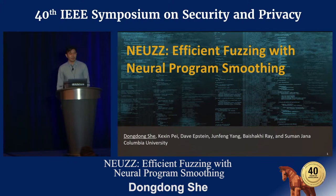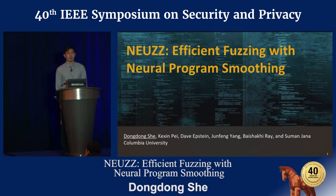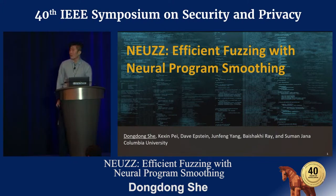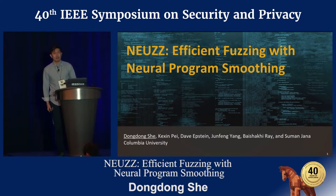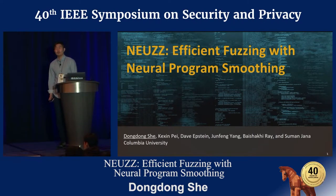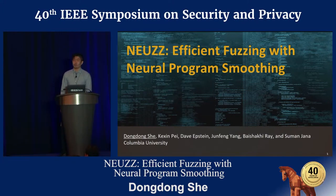Hello everyone. I'm Dong Dong, a PhD student from Columbia University. Today I'm going to talk about a learning-based fuzzer called NOOS. NOOS is based on a neural network model and performs efficient gradient-guided mutation.